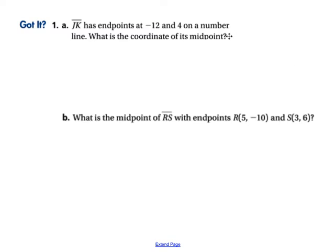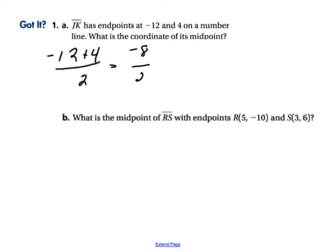Here's one for you to try. JK has endpoints at negative 12 and 4 on a number line. What is the coordinate of its midpoint? We add negative 12 plus 4 to get negative 8, then divide by 2, which gives negative 4. So the coordinate of the midpoint is negative 4.